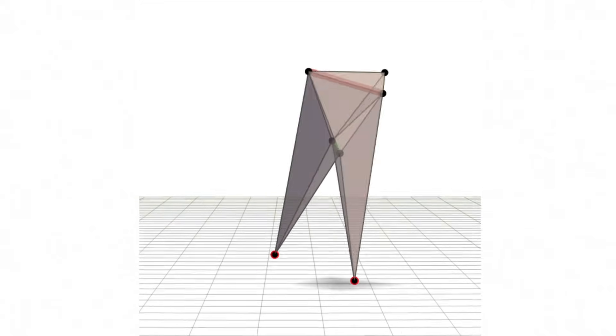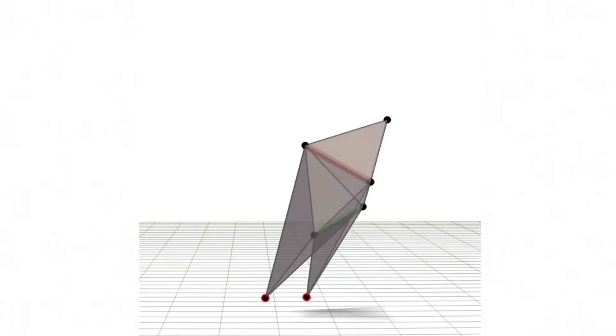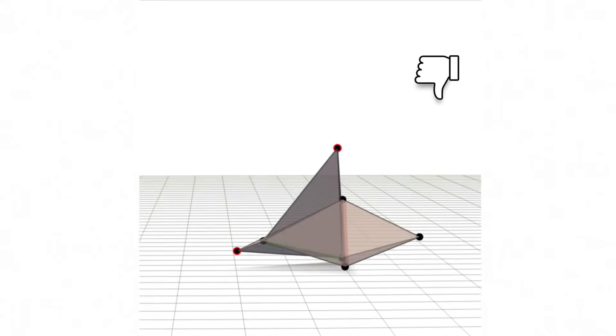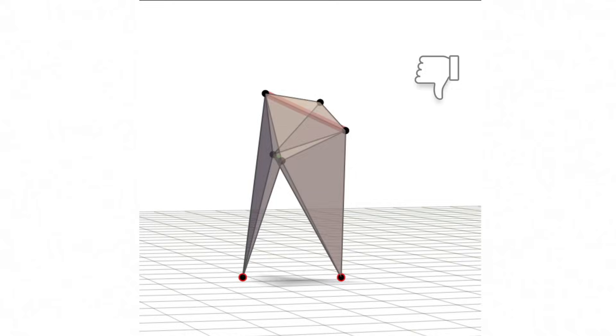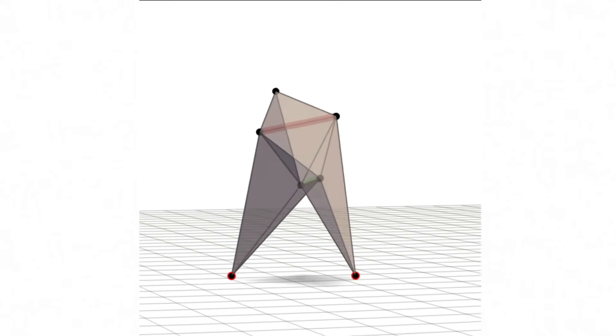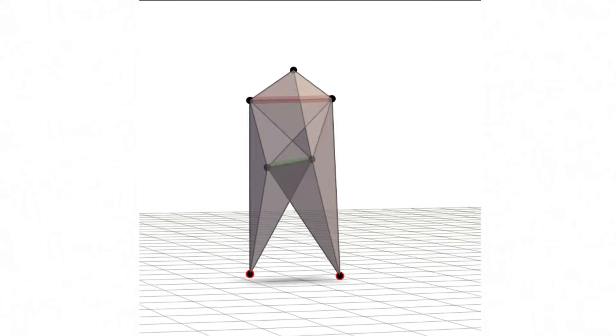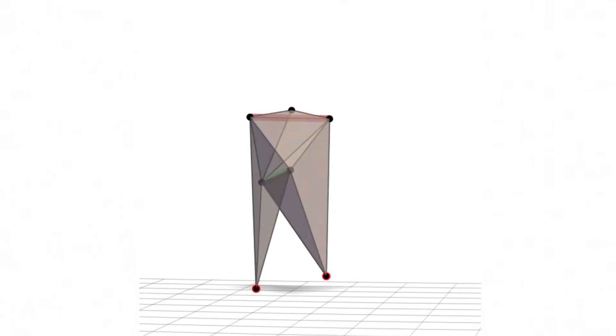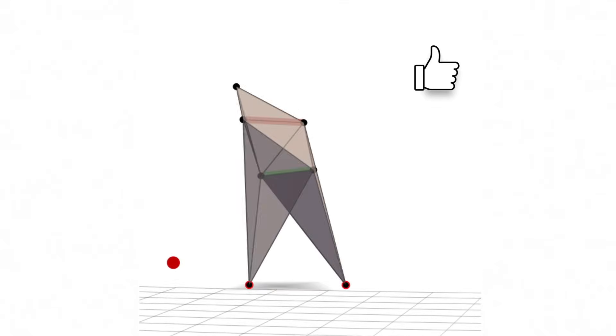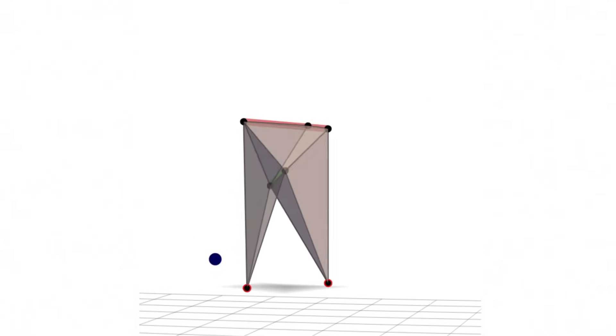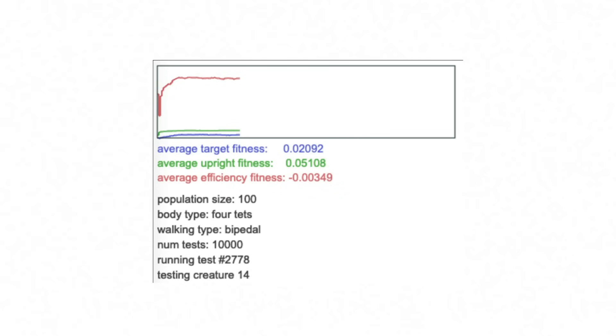A creature that immediately tumbles over into a quivering heap gets a low fitness and is unlikely to mate with another creature to produce offspring. And those creatures that are relatively more fit, that is able to walk closer to the target and not fall over, are more likely to reproduce. This genetic algorithm was designed especially for this experiment.